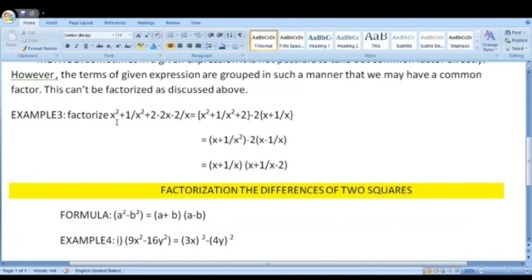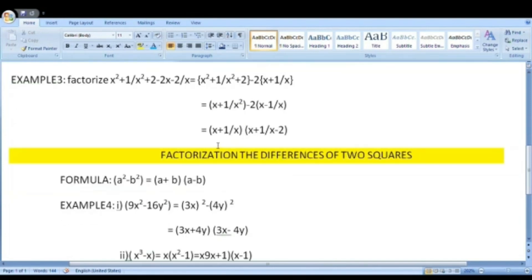Factorize x² + 1/x² + 2 - 2(x + 1/x). Here, 2 is taken as common factor. Moving on to the next step: x + 1/x² - 2(x - 1/x) = (x + 1/x)(x + 1/x - 2).